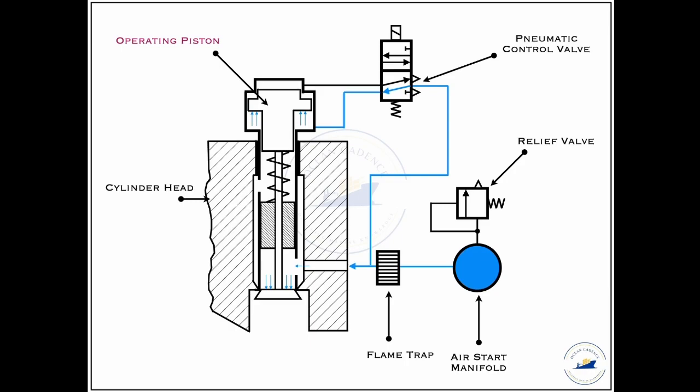Now when the distributor, that is the starting air distributor for a particular unit, is activated, the pilot air is allowed to pass in the form of an air signal to the pneumatic control valve.